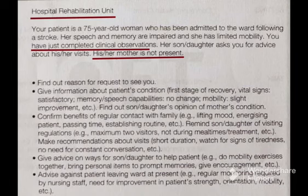Her speech and memory are impaired and she has limited mobility. You have just completed clinical observation — meaning vital sign monitoring. Her son or daughter asks you for advice about visiting. The patient is not present, meaning you are talking in the corridor, nursing station, or outside the room. It is important to ask details regarding the patient during the conversation. Since this is not a known case, you can start as unknown: 'Good morning, my name is Rashmi Rajan, one of the registered nurses working in this hospital rehabilitation unit. How may I address you and how can I help you today?'